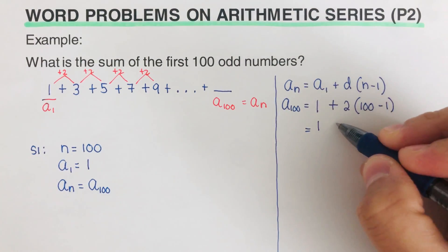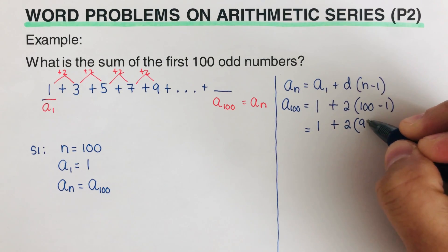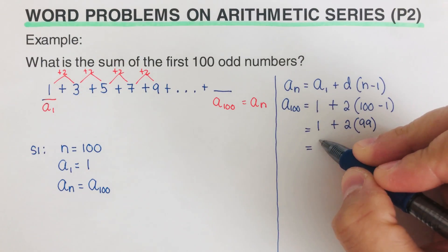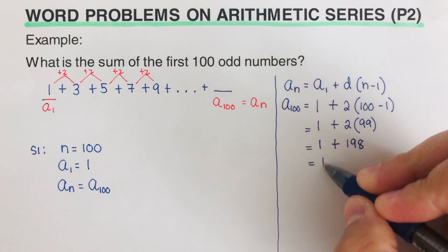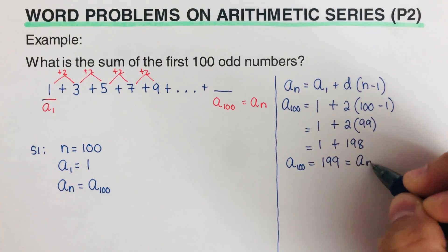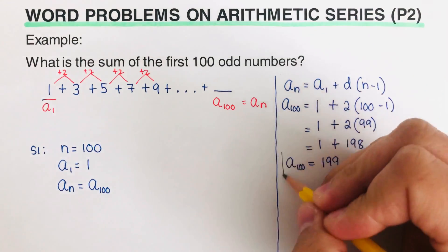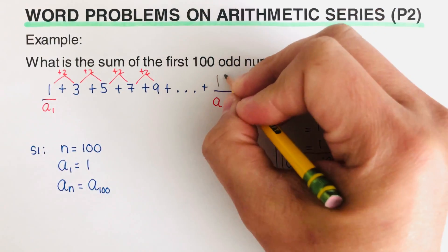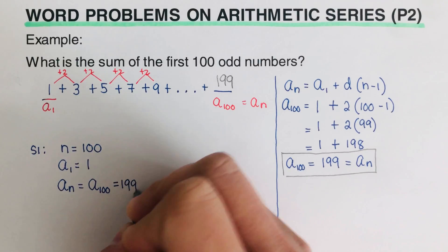That gives us 1 + 2 × 99 = 1 + 198 = 199. So a sub 100 — which is also our a sub n, meaning the last term — is 199. We can now fill that in: a sub n = 199.